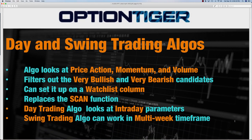The day trading and swing trading algos look at price action, momentum, volume, and price action crossovers across three different moving averages. They plot on a watch list and filter out the very bullish and very bearish candidates in real time. These algos replace the scan function available on all platforms — as soon as you open your platform with these algos set up, you'll immediately see which ones are very bullish and very bearish. The day trading algo uses a five-minute chart; the swing trading algo works on a daily chart for multi-week time frames.